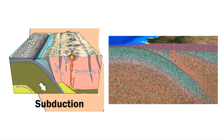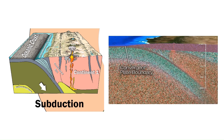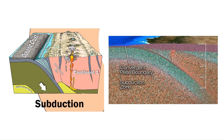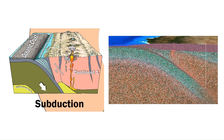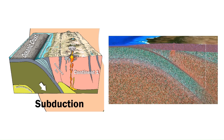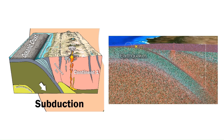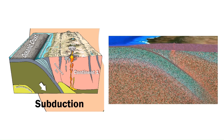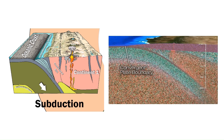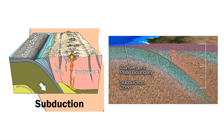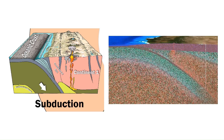Once the new subduction zone forms, the oceanic plate is progressively subducted and the ocean begins to narrow, and the two continental fragments begin to move towards each other. The animation on the right shows how a subduction zone operates. Subduction will continue until all of the oceanic plate is consumed and the continents meet. Continental crust is less dense than oceanic crust and the subduction zone becomes jammed, leading to the final stage.